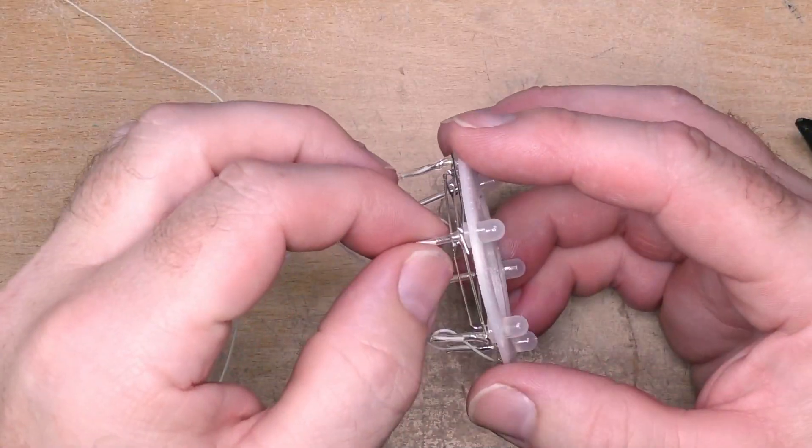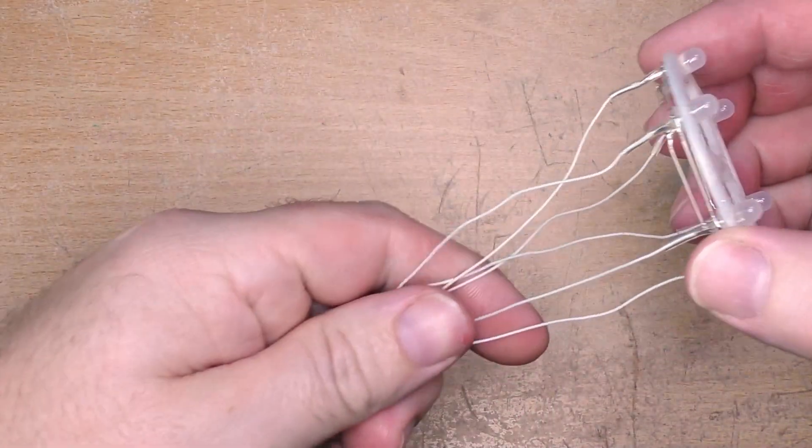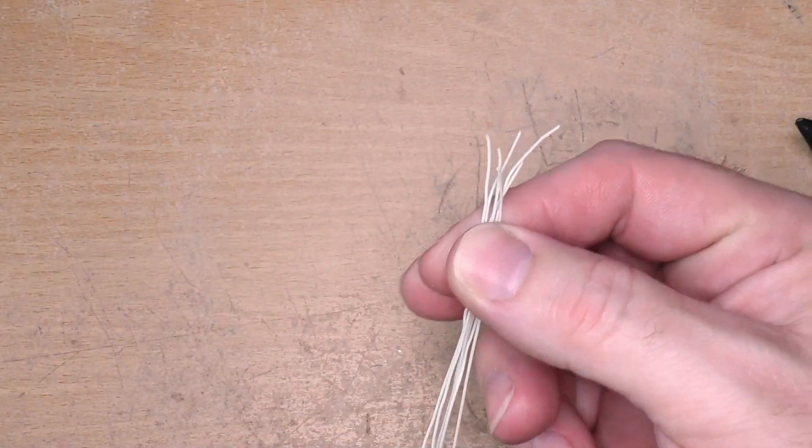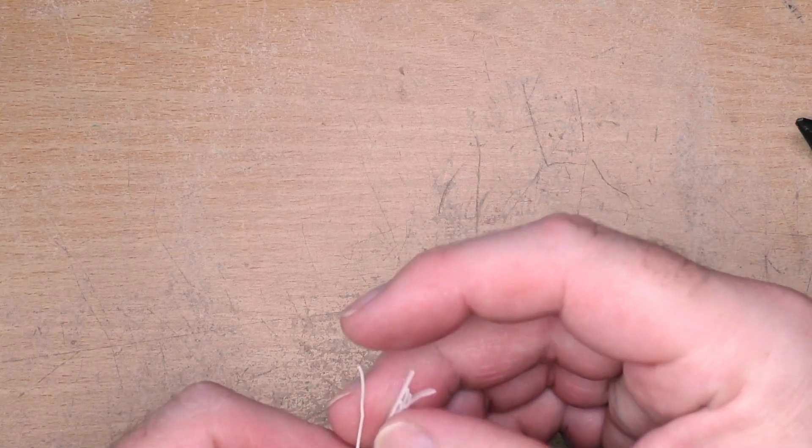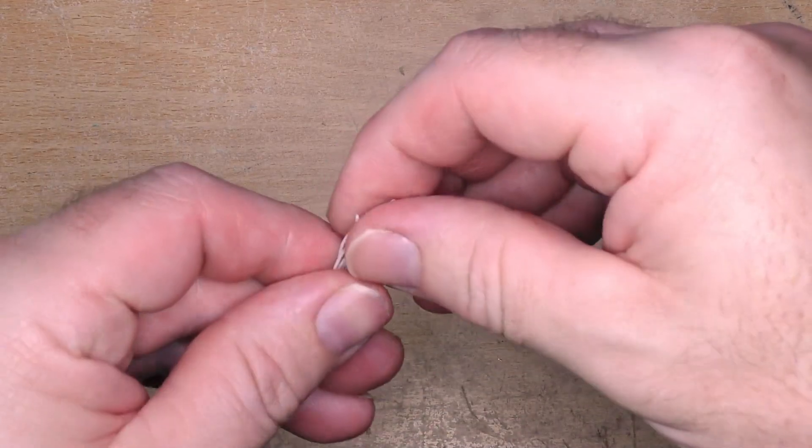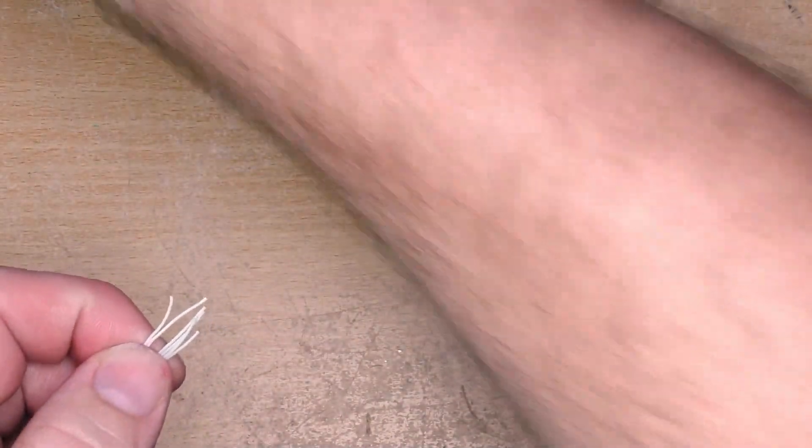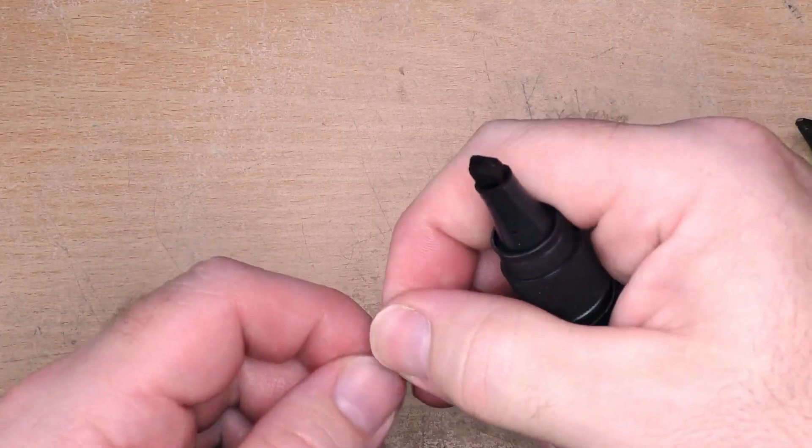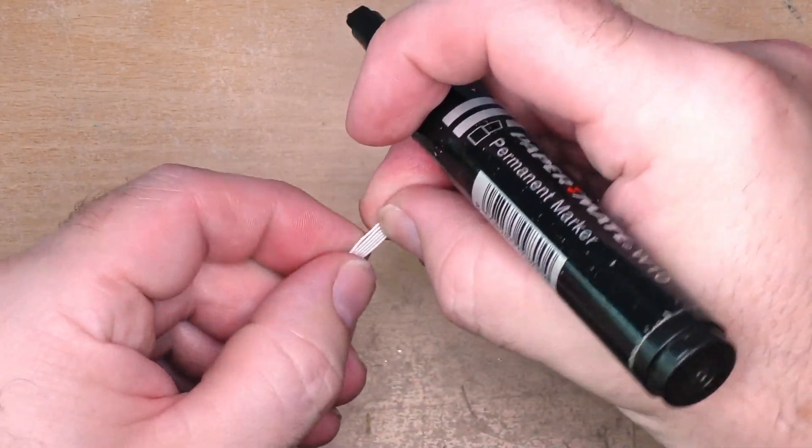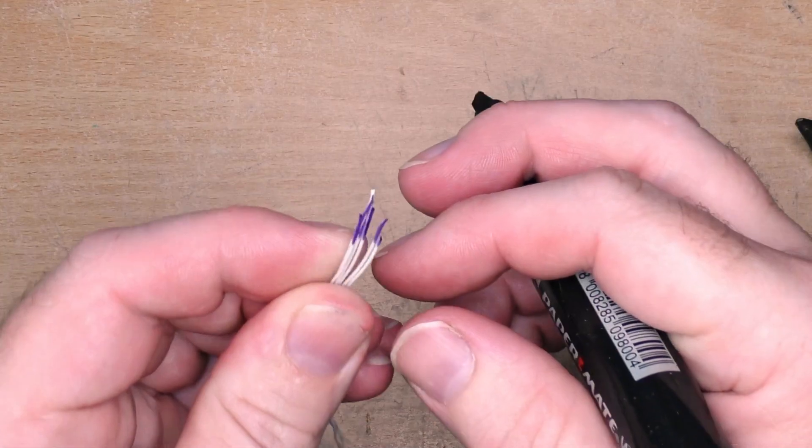That's them all done and shrunk down. Now what I've been doing on each of these sets of rings is marking the cables so I know which ring these belong to. I've just been using a black marker and putting a series of stripes on it.